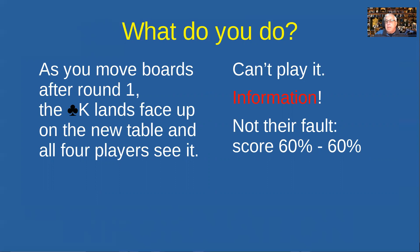What we do is give both sides an assigned score of 60 percent, because it wasn't either side's fault. If their overall score for the evening was going to be more than 60 percent we adjust it up slightly, but in general giving 60 percent is sufficient in a situation like this.